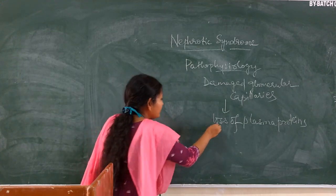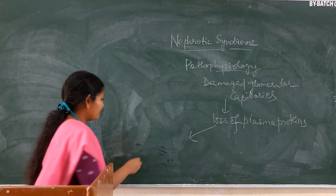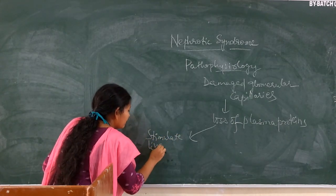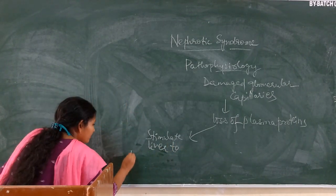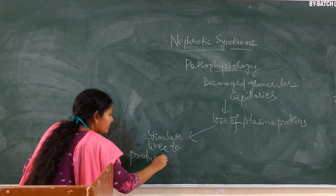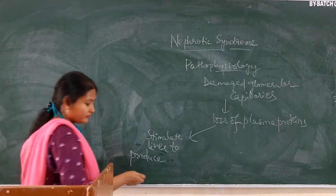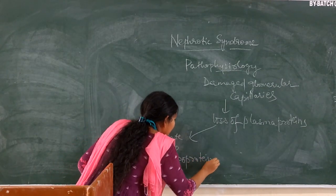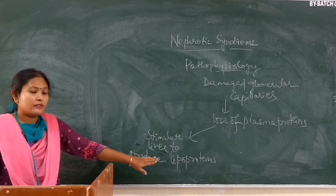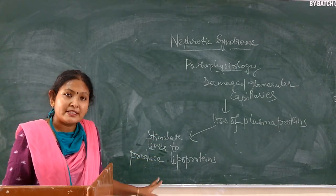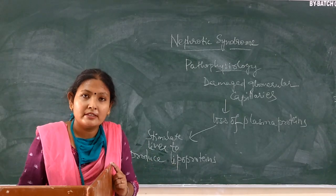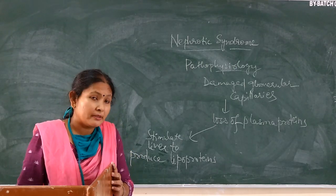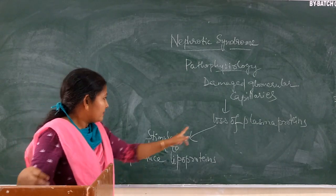Loss of plasma proteins will cause two things. One, it will stimulate the liver to produce lipids or lipoproteins. This will cause an increase in the level of lipids in the blood. So in nephrotic syndrome there will be hyperlipidemia — that means increased level of lipids or lipoproteins in the blood.